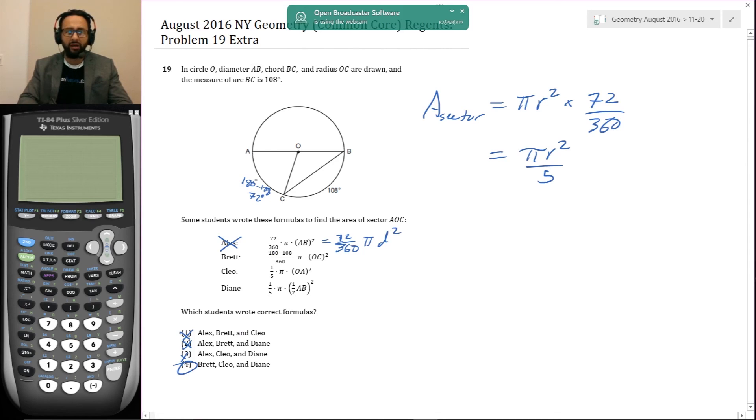But let's confirm the other ones. 180 minus 108, that's the 72. That's how he gets 72 over 360 and pi times OC squared. OC is a radius. That's right. So Brett is correct. Then Cleo has the one fifth and pi and she has OA squared. OA is also a radius because it's half a diameter. So she's right as well. And then Diane has the one fifth, pi, and then half AB, half the diameter, squared. So she's also correct.